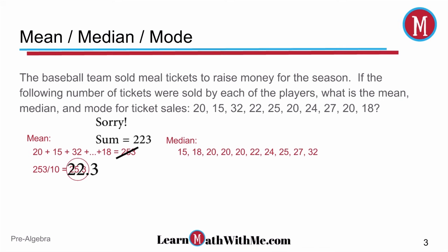So now for the 10 numbers we have in our example, we're going to look at the fifth and sixth positions, which hold 20 and 22. We'll add those up, divide by two, and we get a median of 21.